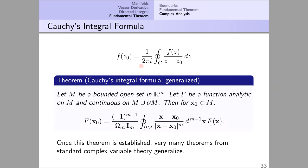Once the theorem is established very many theorems from standard complex variable theory generalize. The key fact about an analytic function is that its values on a manifold can be obtained from its values on the boundary of the manifold.